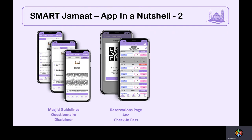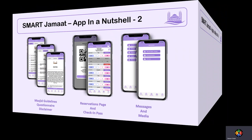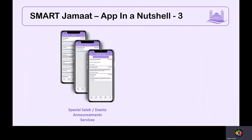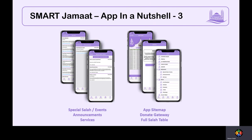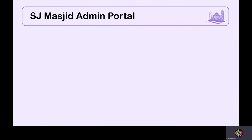The reservations page lets you select brother spots, sister spots, or a combination. After check-in, you receive a check-in pass resembling an airline boarding pass with your QR code, showing the masjid name, salah, and number of spots reserved. The bottom of the app includes masjid app functionality: messages, live media, announcements, services, and events — and for events, you can make reservations directly, which is the key difference enabled by the centralized reservation system.